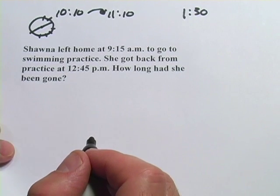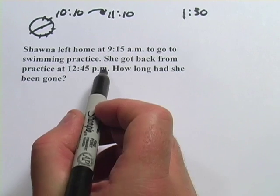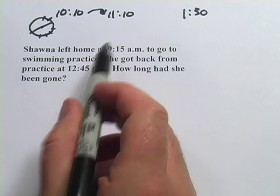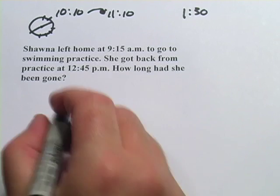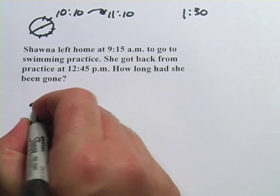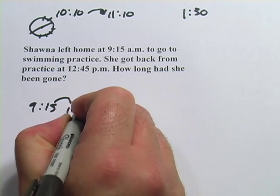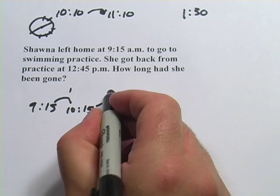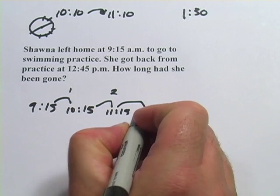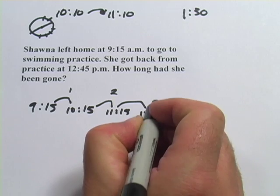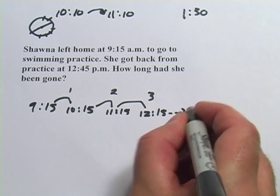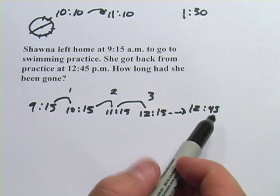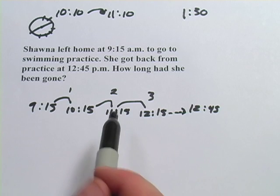This next one says: Shauna left home at 9:15 to go to swimming practice. She got back from practice at 12:45 p.m. How long had she been gone? I'm going to use the same trick of counting ahead by an hour. Starting at 9:15, I go to 10:15 — that's one hour. Then to 11:15 — that's two hours. Then to 12:15 — I'm still not up to 12:45, so that's three hours so far. Now I have to go from 12:15 to 12:45, so I subtract the minutes: 45 minus 15 equals 30.